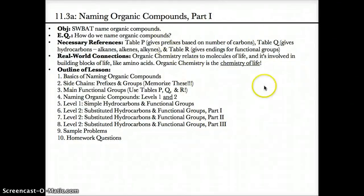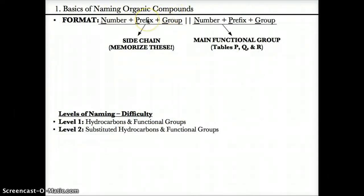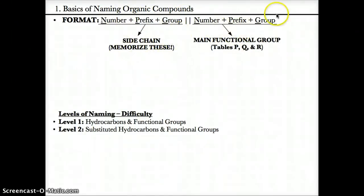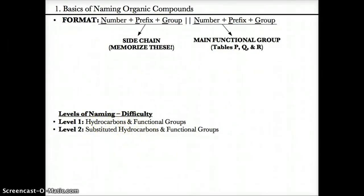11.3a: naming organic compounds. Please refer to table P, which gives prefixes based on the number of carbons in organic compounds; table Q, which gives names of hydrocarbons; and table R, which gives endings in functional groups. The format is the number plus the prefix plus the group for the side chain first, then the number plus the prefix plus the group for the main functional group last. The two levels of difficulty are hydrocarbons in simple functional groups, and substituted hydrocarbons in functional groups.